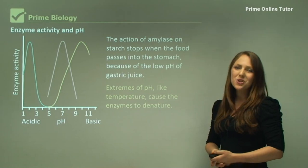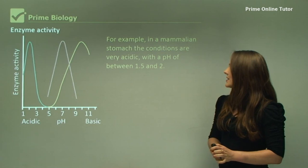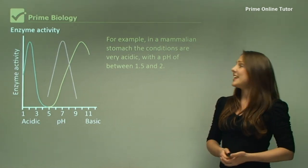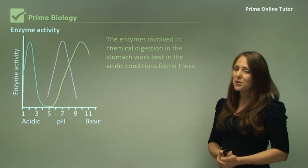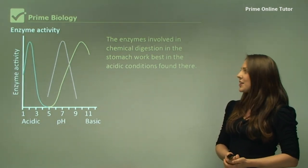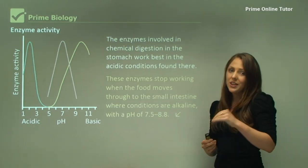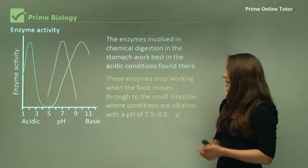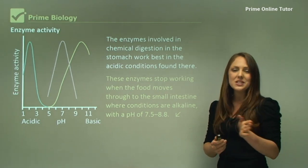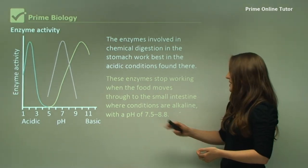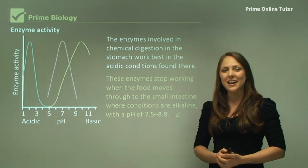Extremes of pH, like temperature, cause the enzymes to denature. For example, in a mammalian stomach the conditions are very acidic with the pH between 1.5 and 2. The enzymes involved in chemical digestion in the stomach work best in acidic conditions found there. These enzymes stop working when the food moves through to the next stage, which is the small intestine. That changes the pH and the acidic conditions become more alkaline of 7.5 to 8.8 pH. This concludes our pH and enzyme activity.